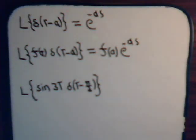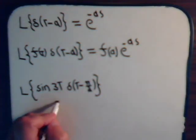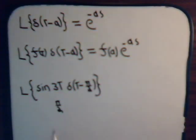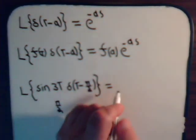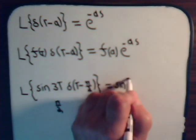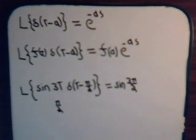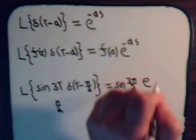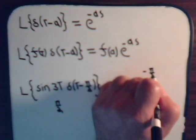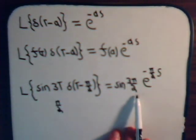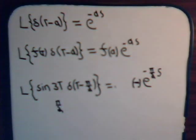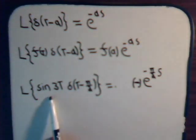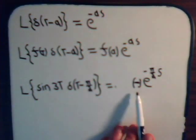For this problem, a is pi over 2, and f(t) is the sine of 3t. This equals f(a) where a is pi over 2, so this equals the sine of 3 pi over 2, times e to the minus pi over 2 times s. The sine of 3 pi over 2 is negative 1, so the Laplace transform of sine(3t) multiplied by this Dirac delta function is just minus e to the minus pi over 2 times s.